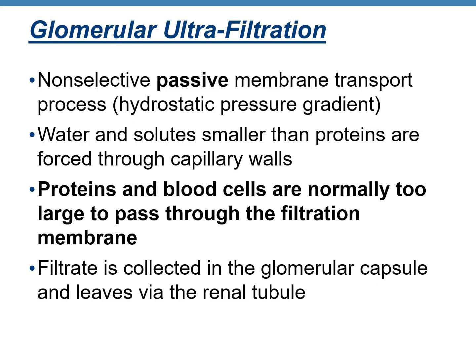What is glomerular ultrafiltration? This is a passive membrane transport process and the gradient is hydrostatic pressure. Blood comes at a very high pressure in the glomerulus, and because of this, water and solutes which are smaller than proteins get filtered out through the glomerular capillary walls and are collected in the cup-shaped Bowman's capsule.